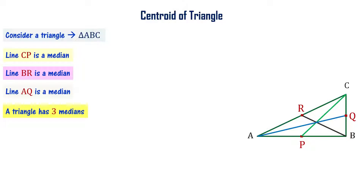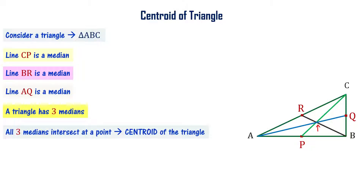The three medians are intersecting at one point. The intersection point of all three medians of a triangle is called the centroid of the triangle. We have drawn three medians and their intersection point is the centroid.